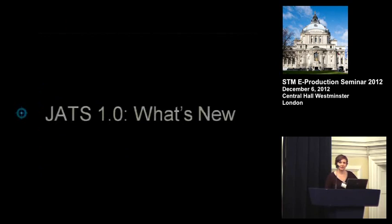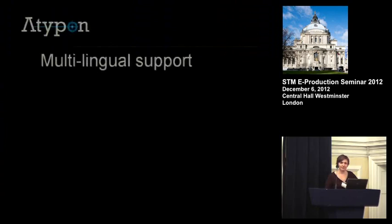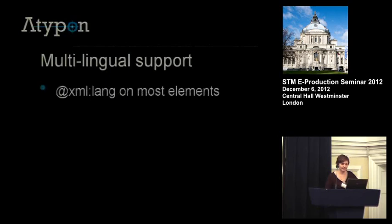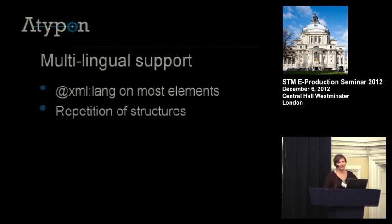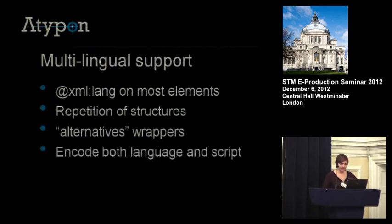What's new in JATS? I want to highlight two things in JATS 1.0 that would be useful to people. The first is expanded multilingual support, and JATS does this in a few ways. The XML lang attribute is now available on almost every element in the DTD. Second, you can use repetition of structures that might not normally be repeated — for instance, a copyright line or a set of keywords in multiple languages. Third, there's the introduction of alternatives wrappers for certain constructs that can only be repeated once, such as author names inside contrib tags, which you can wrap and have in multiple languages. And finally, there's some support for dealing with languages that might be in more than one script.